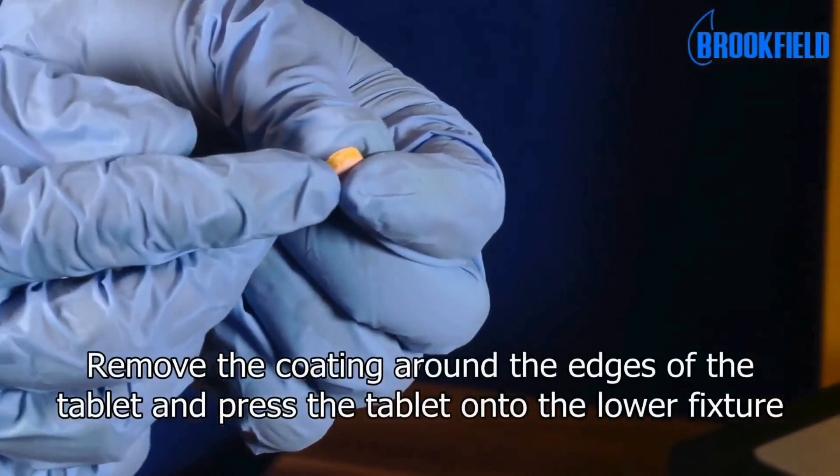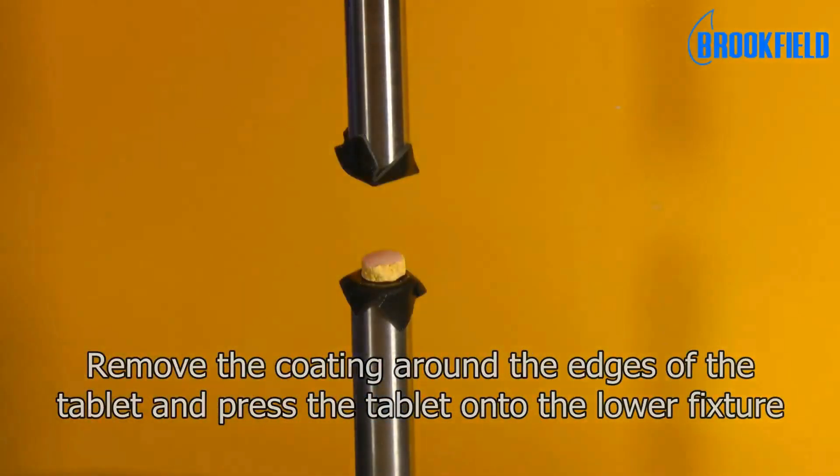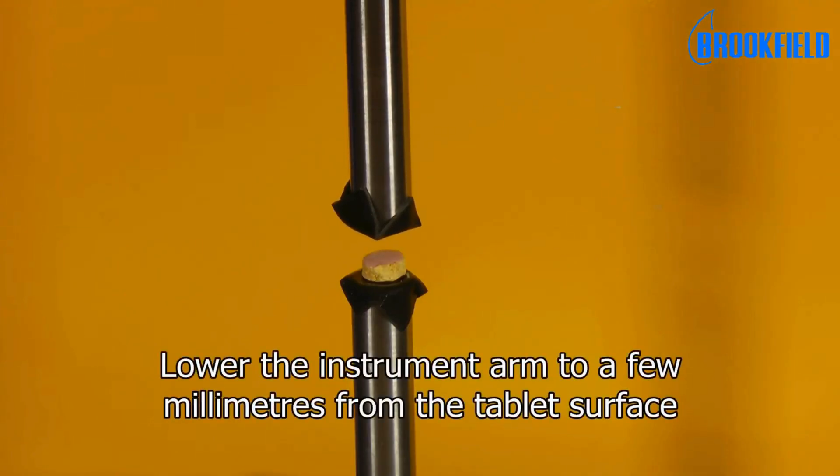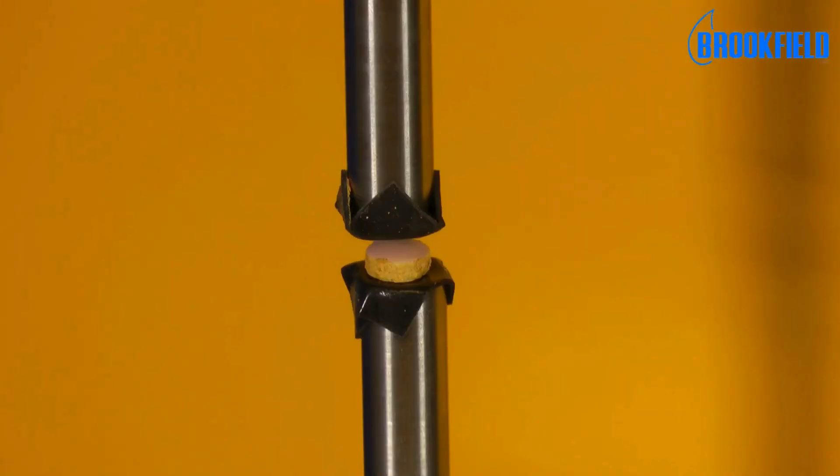Remove the coating around the edges of the tablet and press the tablet onto the lower fixture. Lower the instrument arm to a few millimeters from the tablet surface. The test is now ready to begin.